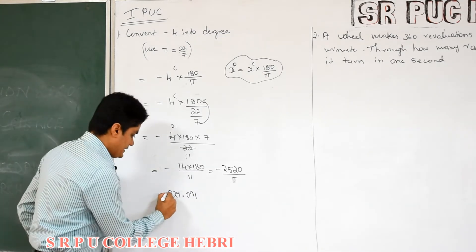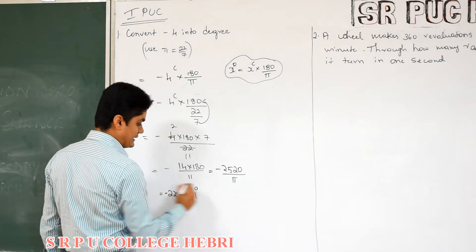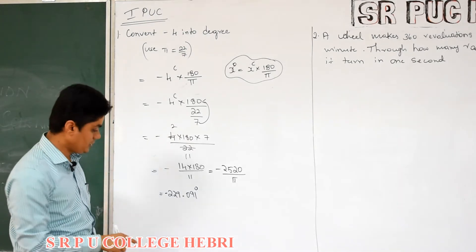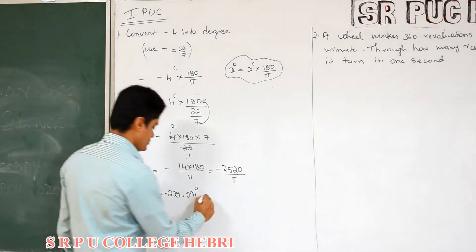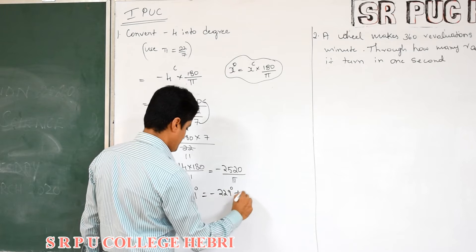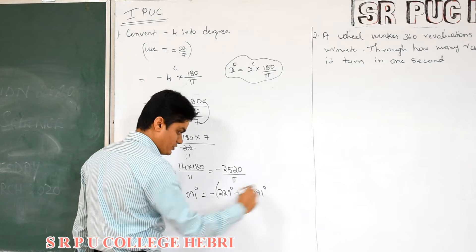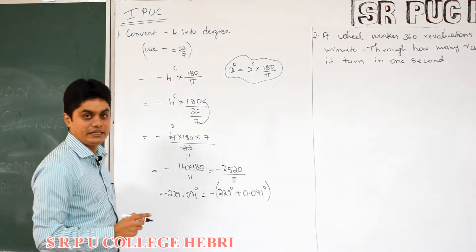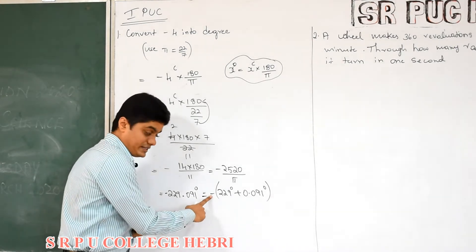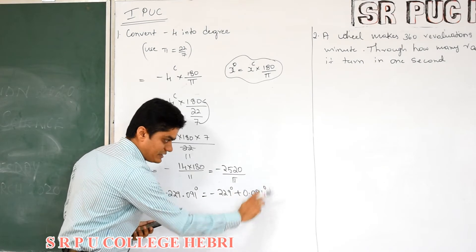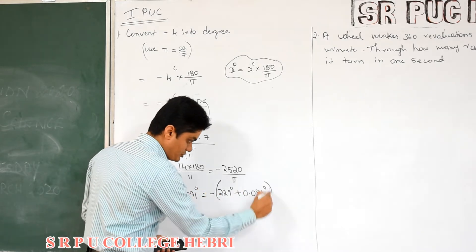So, minus 229.091. What is the unit? The unit will be degree. But as in the last problem, you cannot keep the answer like this — it should be written in terms of degree, minute, and second. So it is minus 229 degree plus 0.091 degree. You have to convert into minute and second. Since there is a minus sign, put brackets, otherwise this will give a different answer.